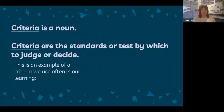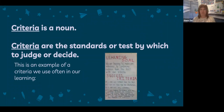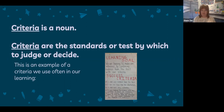Criteria is also a noun. Criteria are the standards or tests by which to judge or decide. This is an example of criteria we often use in our learning — you're all super familiar with success criteria. Think about when you use success criteria in school: when the teacher gives you a learning goal, the criteria are all the steps you need to fulfill or follow in order to reach that goal. So any time you make a checklist for a goal you want to achieve, each one of those check marks on your list is a criteria.